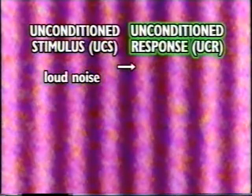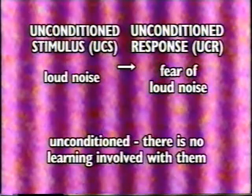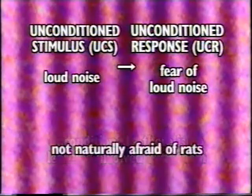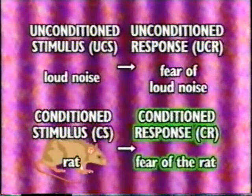Let's apply the terms to this experiment. The Unconditioned Stimulus, or UCS, is the loud noise. The Unconditioned Response, or UCR, is Little Albert's fear of the loud noise because he's naturally afraid of it. These factors are unconditioned because there is no learning involved with them — Little Albert is naturally afraid of loud noises. He's not naturally afraid of rats, so the rat is the Conditioned Stimulus, or CS. His fear of the rat is the Conditioned Response, or CR.